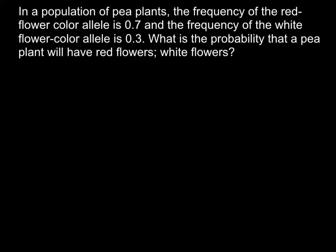In a population of pea plants, the frequency of the red flower color allele is 0.7 and the frequency of the white flower color allele is 0.3. What is the probability that a pea plant will have red flowers, white flowers?